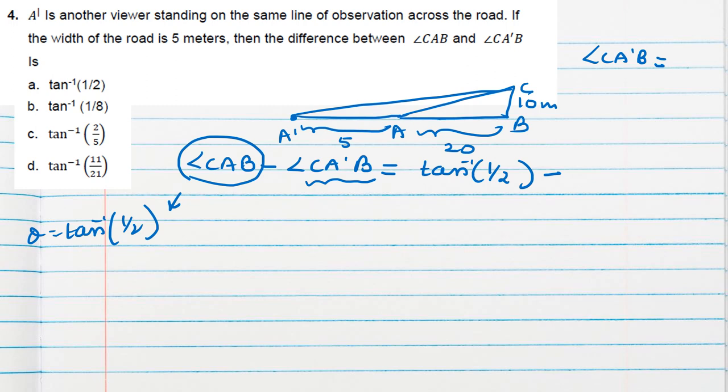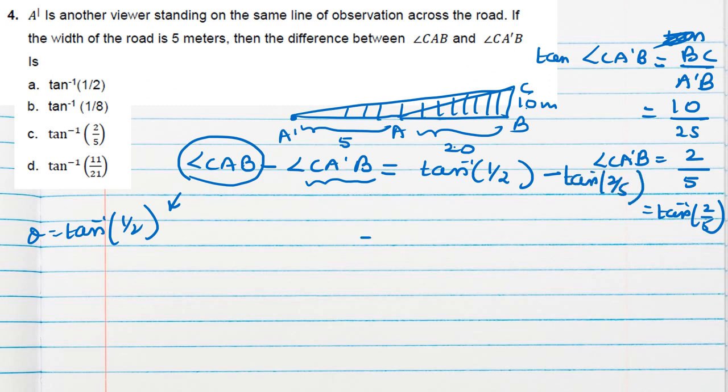Because in triangle CA dash B this whole triangle using tan trigonometric ratio. So tan CA dash B is BC by A dash B. So tan CA dash B length will be 20 plus 5, 25. So 5 twos are 10, 2 by 5 I will get. That means CA dash B is equal to tan inverse 2 by 5. So this tan inverse 2 by 5 value I will substitute here. Now this is actually tan inverse X minus tan inverse Y formula. This will be tan inverse X minus Y by 1 plus XY. So that only we will substitute here. X and Y are 1 by 2 and 2 by 5.